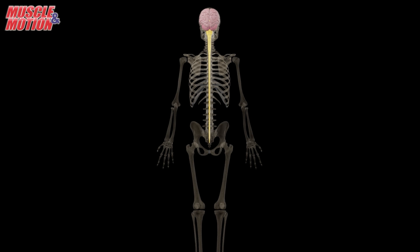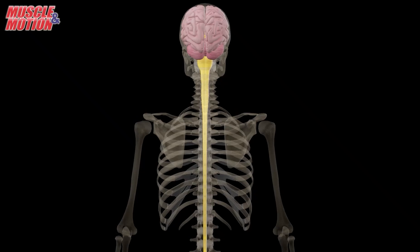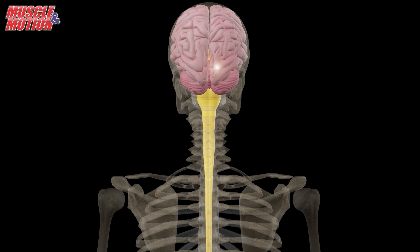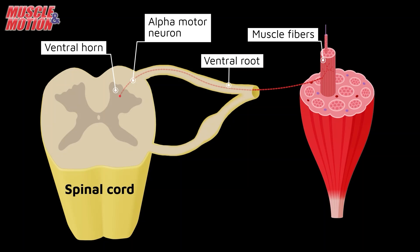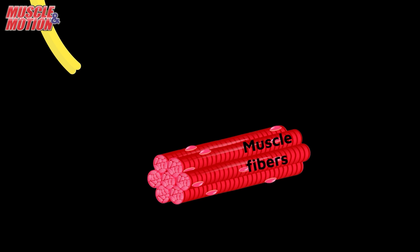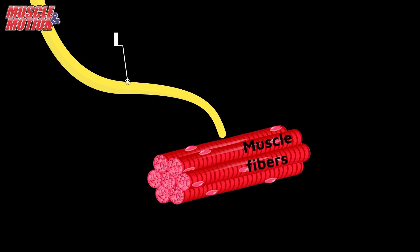In summary, when you want to activate a muscle for a specific task, the brain sends a signal through the spinal cord. The signal exits the spinal cord through the alpha motor neuron and travels along the axon until it reaches the target muscle. Then, the axon branches and transmits the signal to the muscle fiber through the neuromuscular junction.